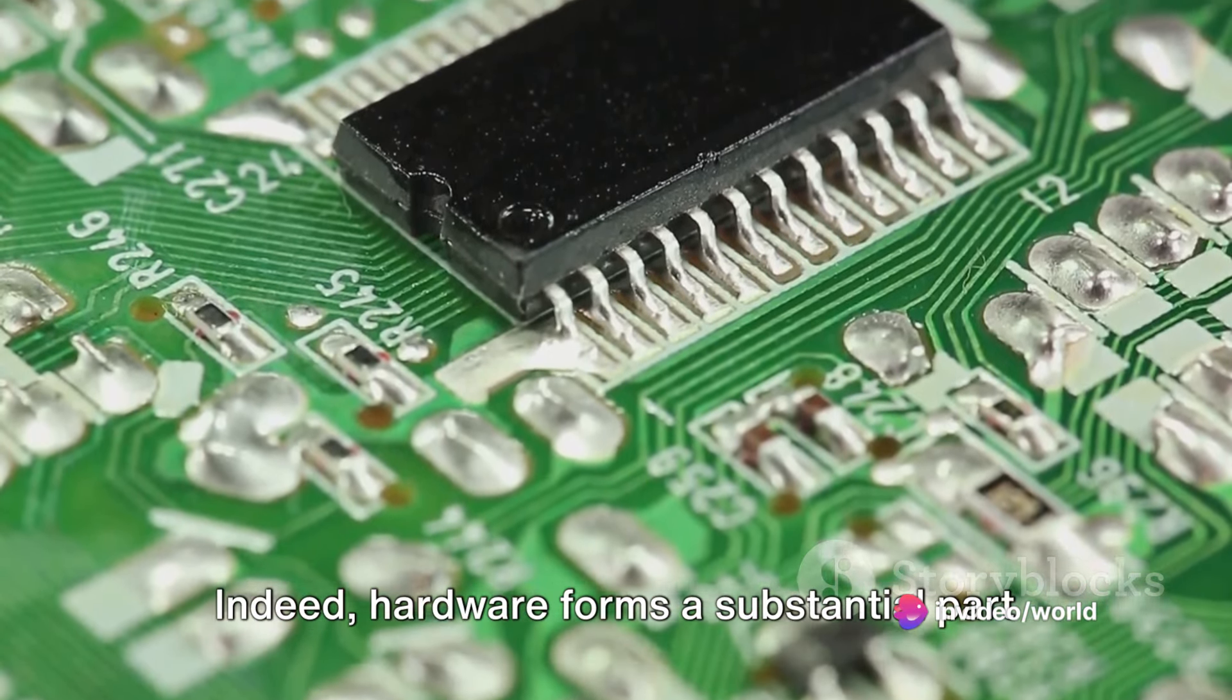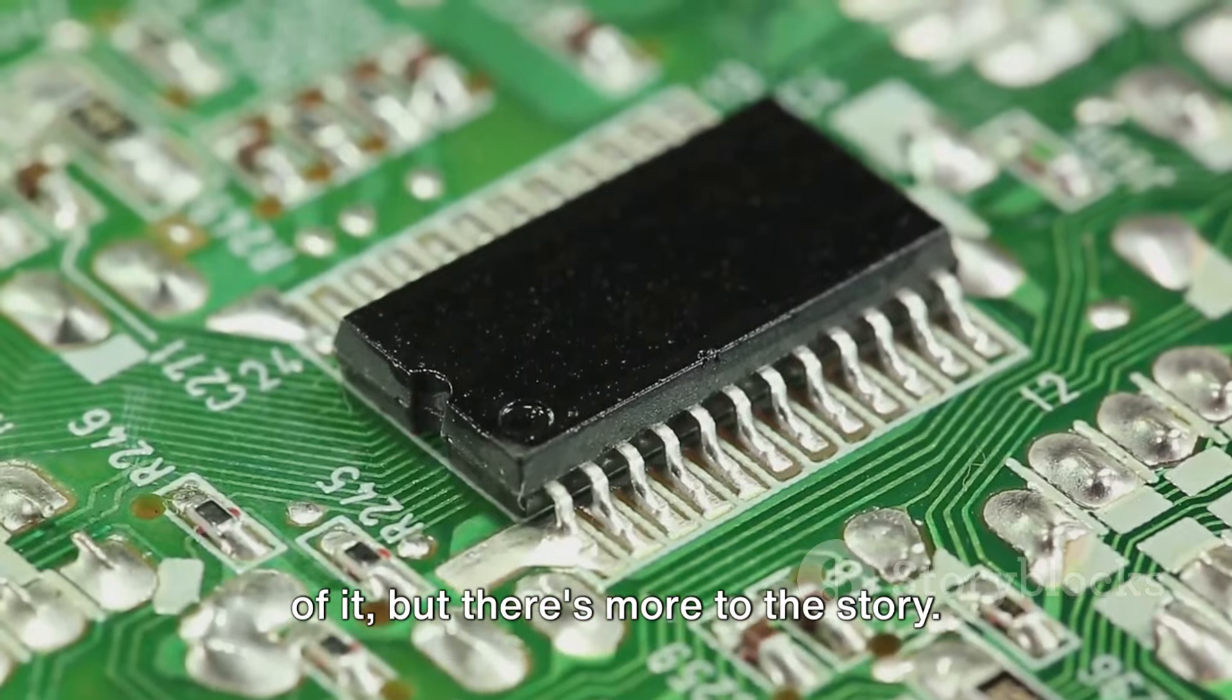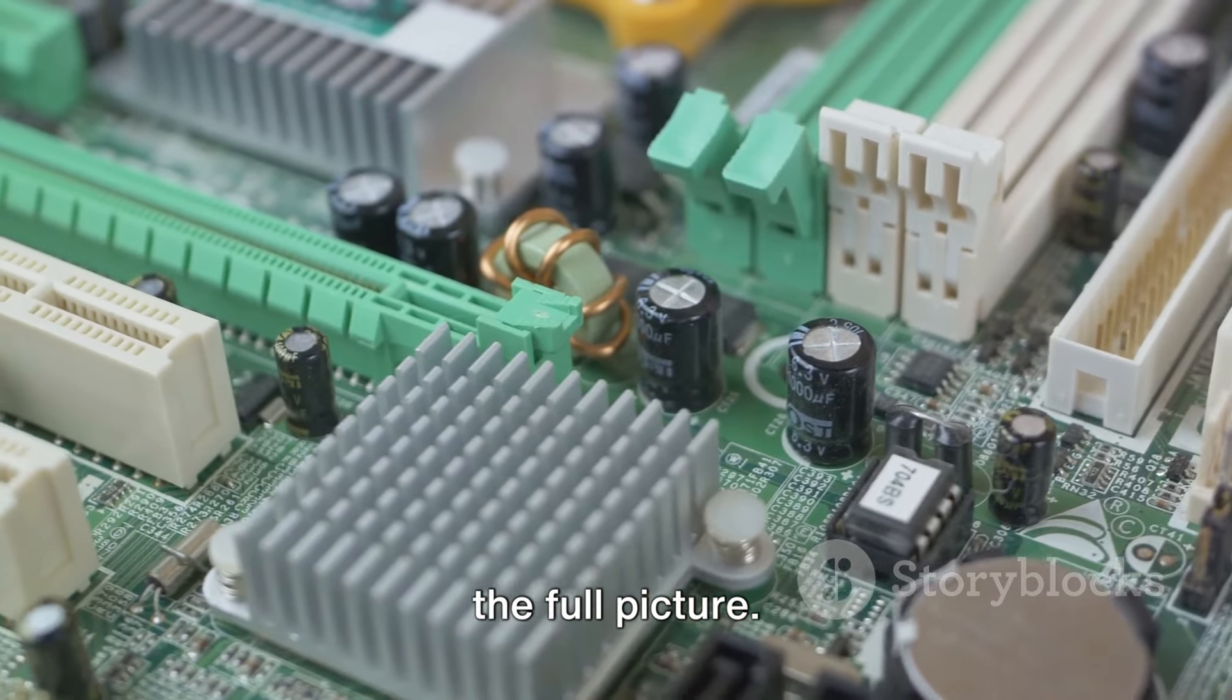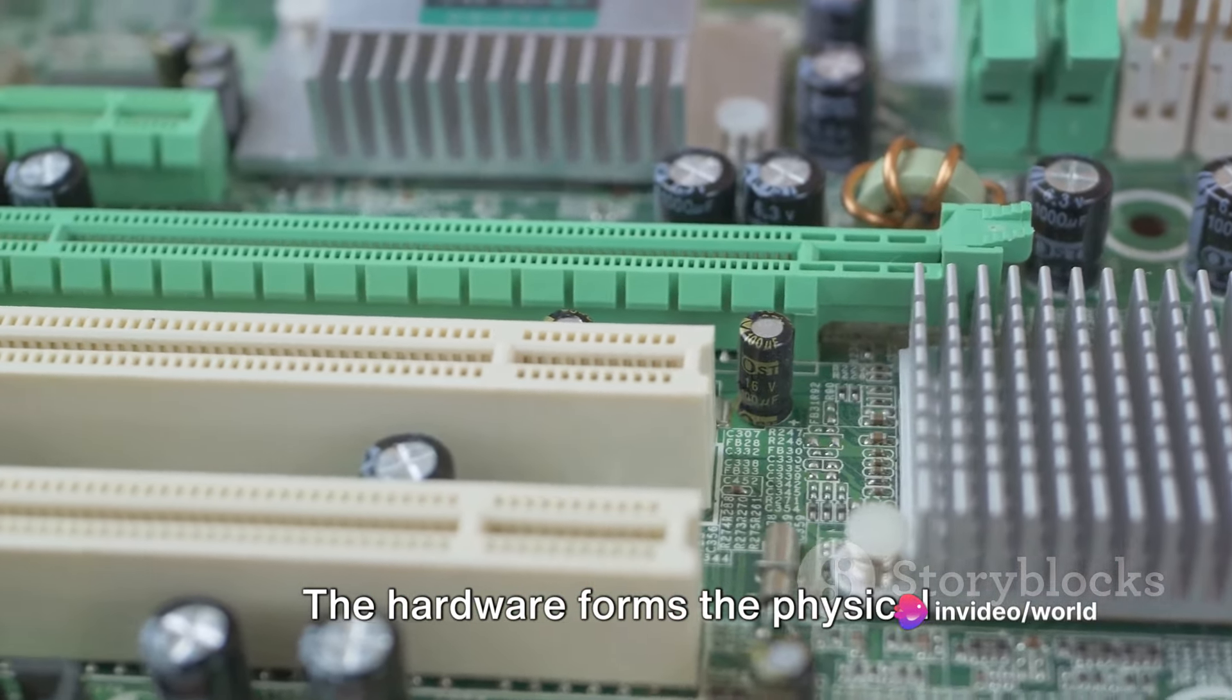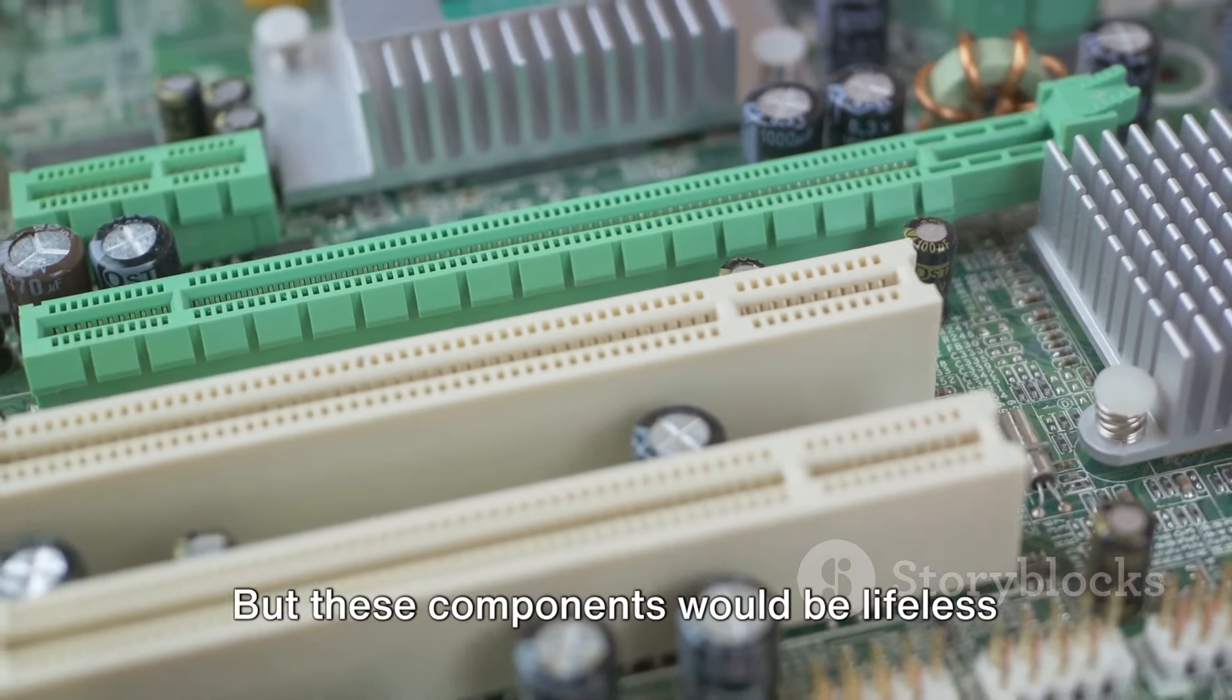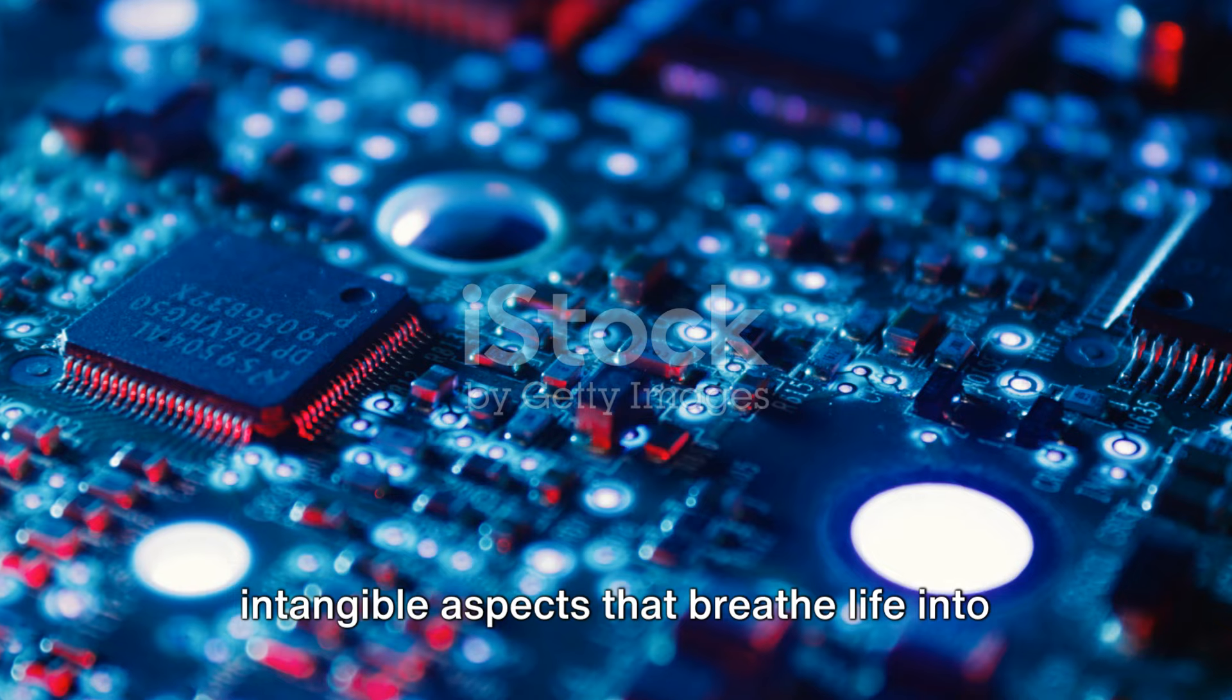Electronics runs deeper than you might think. It's a common misconception that electronics is all about hardware. Indeed, hardware forms a substantial part of it. But there's more to the story. Let's delve a little deeper to unravel the full picture. Electronics is a fusion of hardware, software, and firmware. The hardware forms the physical components, the tangible bits that you can touch and feel.